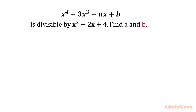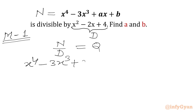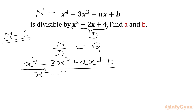So let's get started. I will be solving this question in two ways. So I will write here Method 1. Let's say our dividend, which is in the numerator, is n, and our divisor, which is in the denominator, is d. So I can write n over d. Let's write n as x⁴ minus 3x³ plus ax plus b, and divisor d is x² minus 2x plus 4.